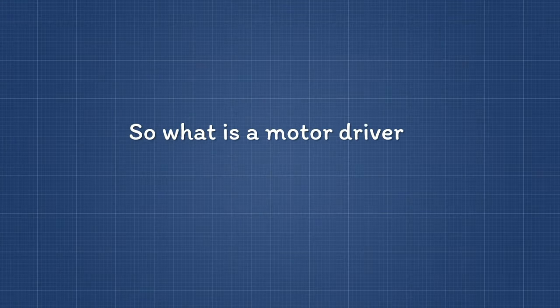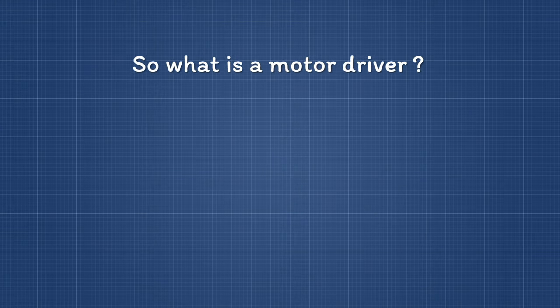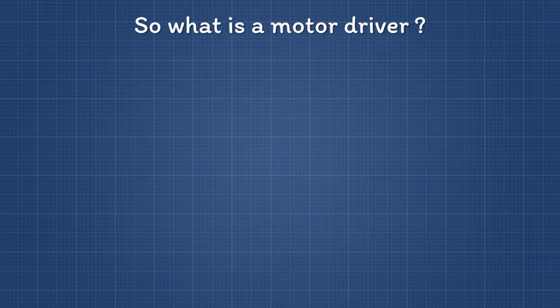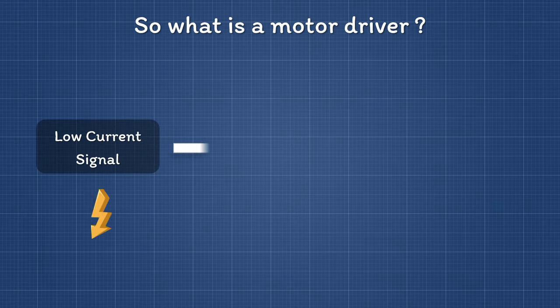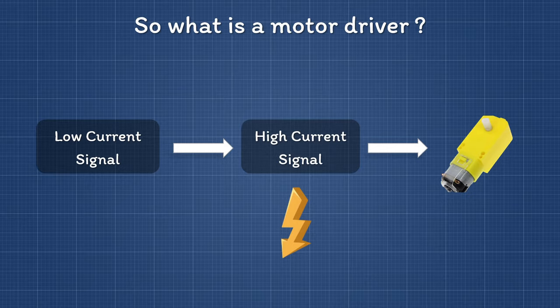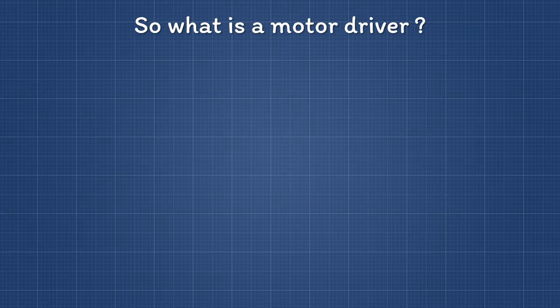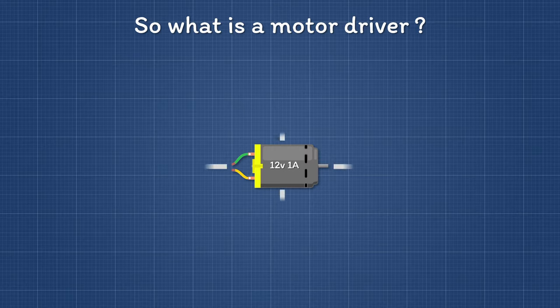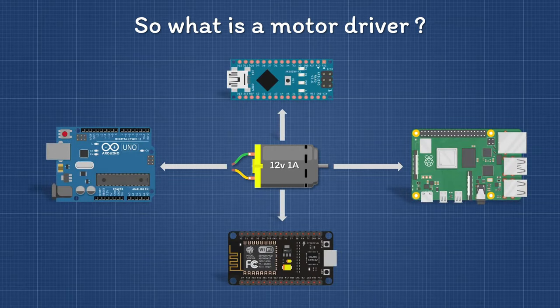So what is a motor driver? It is known by the name that it drives the motor. The motor driver acts as an amplifier — it converts the low current signal into a high current signal which helps to drive the motor. But why is this conversion needed? Suppose we have a motor which runs on 12 volts and it draws a current of 1 amp, and we want to run it with the help of microcontrollers.